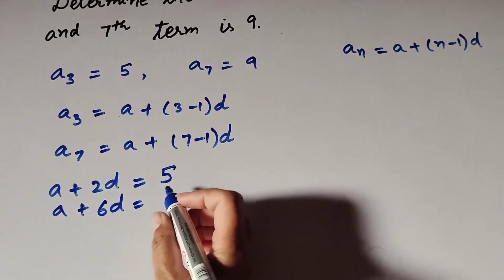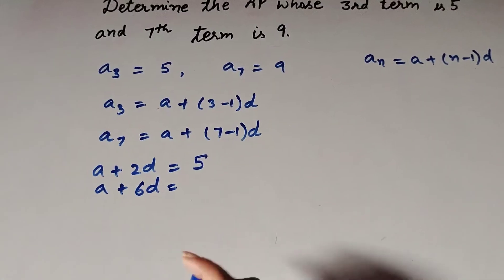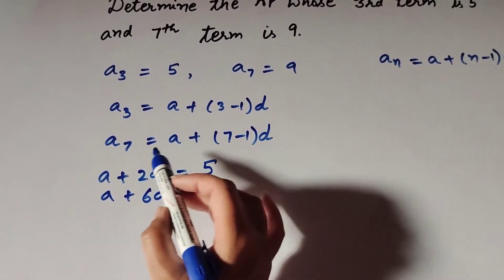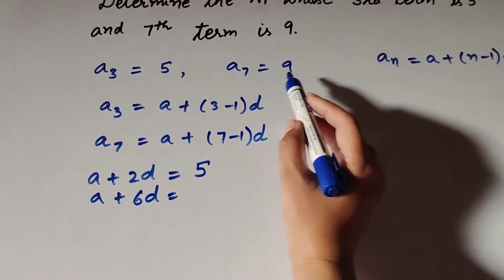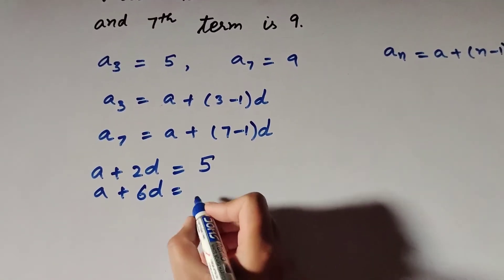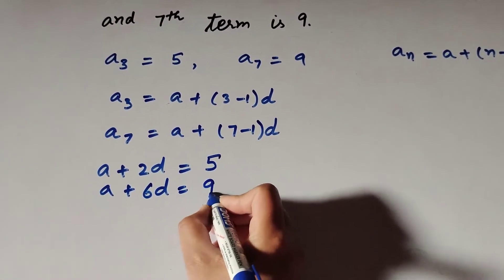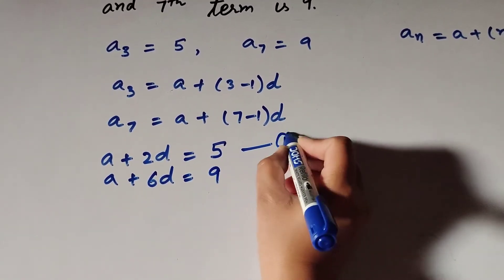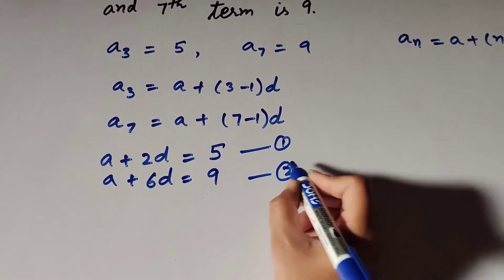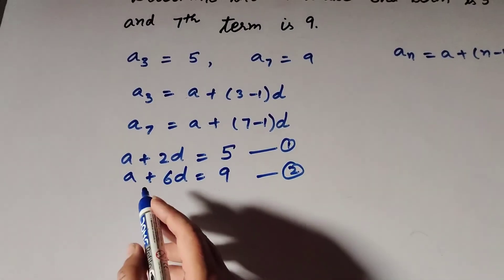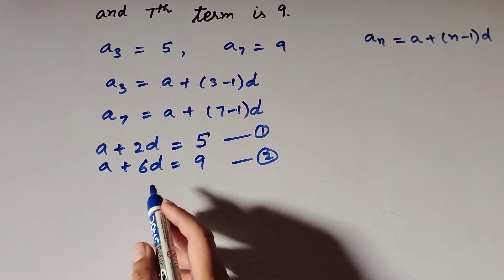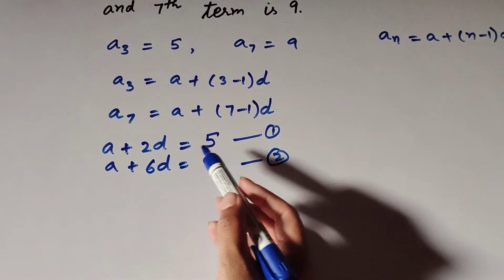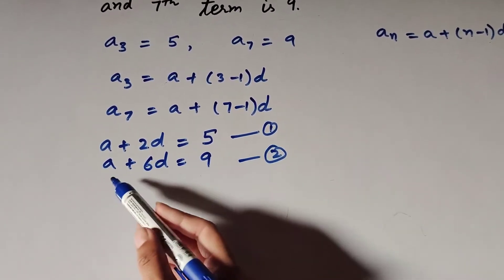We mark these as equation number 1 and equation number 2. These are two linear equations — their power is 1 — and there are two variables, a and d. So we will find the values of a and d.